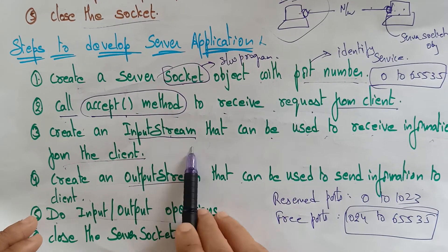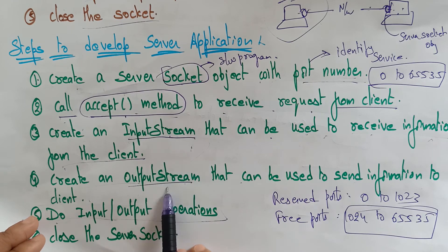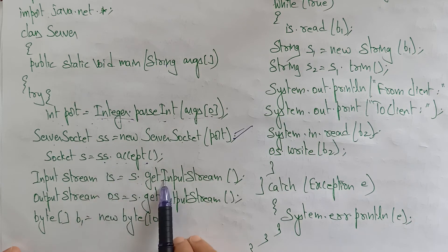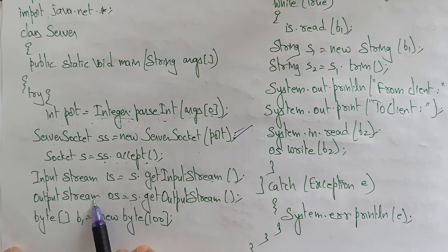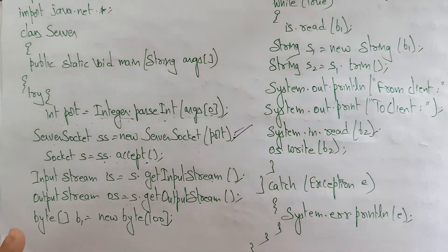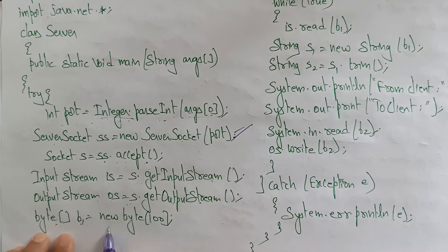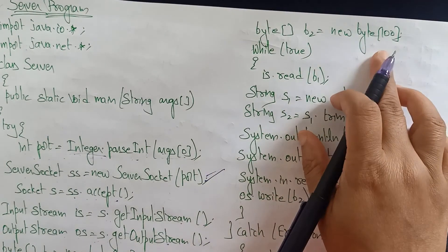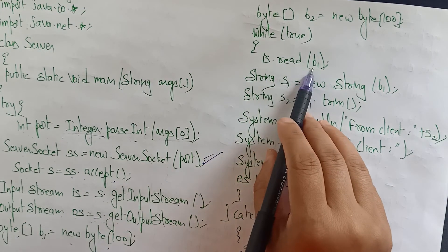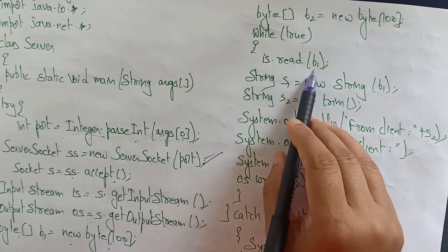After creating the ServerSocket, call the accept() method to receive a request from the client: Socket s = ss.accept(). Then create the streams — InputStream is to receive information from the client: InputStream is = s.getInputStream(). OutputStream is to send data to the client: OutputStream os = s.getOutputStream(). Then perform I/O operations. Declare: byte[] b1 = new byte[100] and byte[] b2 = new byte[100].